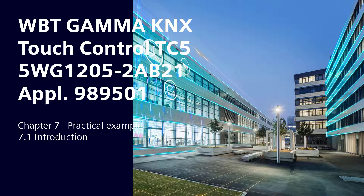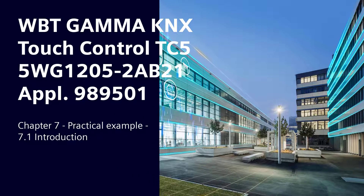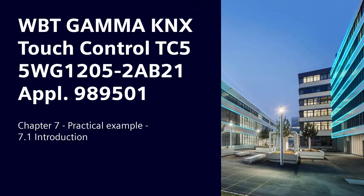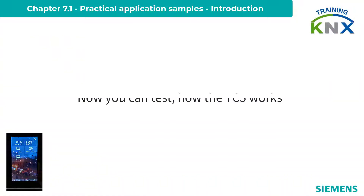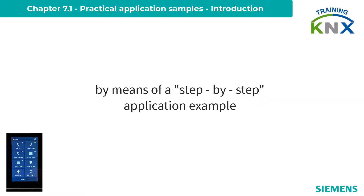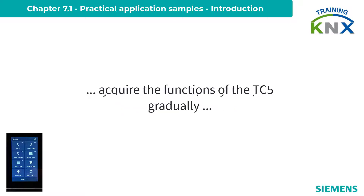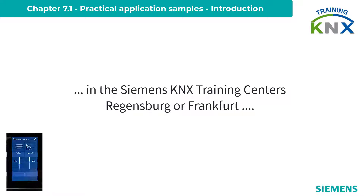Chapter 7. Siemens Gamma KNX Touch Control TC5 — Practical Application Sample. 7.1 Introduction. You may now put the theoretical knowledge acquired in the previous chapters into practice. In this chapter, an application example is to be worked out step by step. It is ideal if you arrange a practical course for room control with the TC5 at the Siemens KNX Training Center.